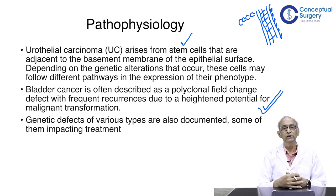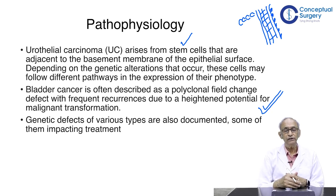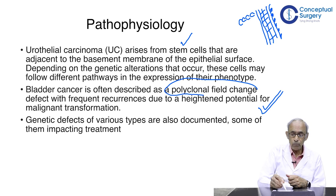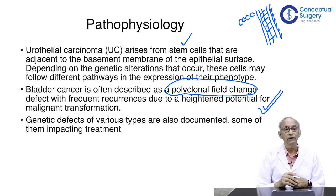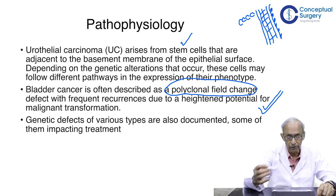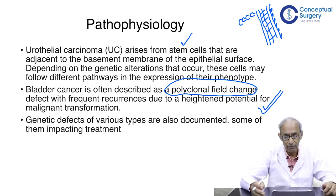Bladder cancer is described as a polyclonal field change. In other words, all areas lined by urothelium — starting from the calyces in the kidney down to the bladder — are potentially prone to the same malignancy. This is why, if there is a TCC involving the pelvis of the kidney, you are supposed to remove the kidney, the ureter, and a cuff of bladder epithelium, because this is considered a field change.